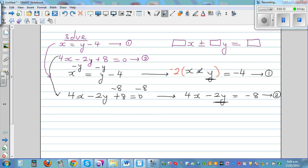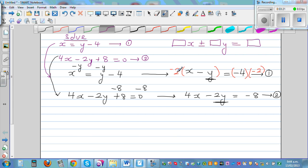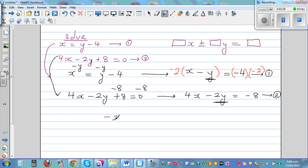So if you multiply this side by negative 2, it also multiplies this side by negative 2. So the first equation now changes to, you have to expand, negative 2 times x is negative 2x. Negative 2 times negative y is plus 2y is equal to negative 4 times negative 2 is plus 8.